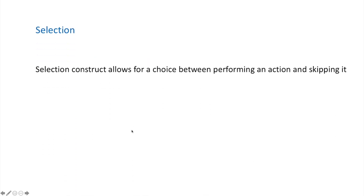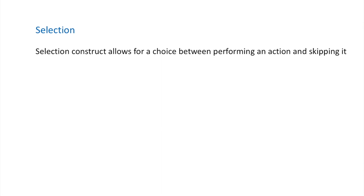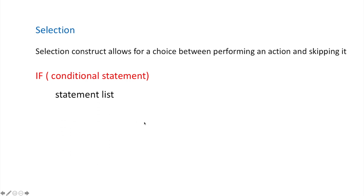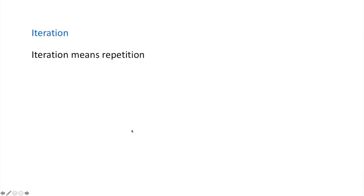Selection is a construct that allows for a choice between performing an action and skipping it. You can have IF statements: write your condition after IF, then your statements if the condition is true, otherwise add your ELSE statements. To end the IF statement, you simply write ENDIF.